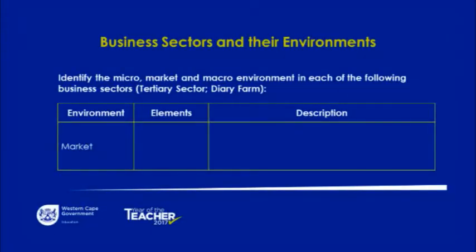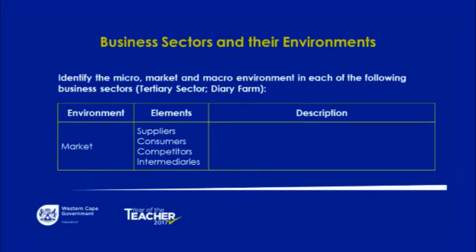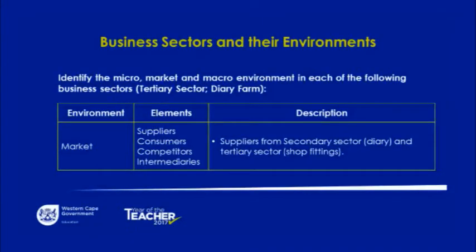Moving on to the market environment of the tertiary sector of the dairy farm — the elements remain the same. The elements are the suppliers, the consumers, the competitors, and the intermediaries. The description is that the suppliers come from the secondary sector of the dairy farm and the tertiary sector, which includes shop fitting. They may choose who they want as suppliers — they have influence.